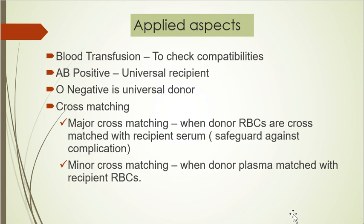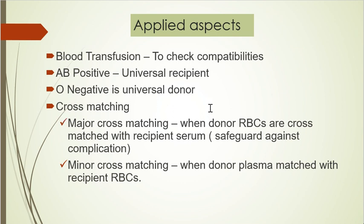Applied aspects include blood transfusion, where compatibility must be checked before transfusing blood from donor to recipient. AB positive is the universal recipient as it has all antigens and no antibodies. O negative is the universal donor as it has no antigens to cause reaction. Cross-matching is performed to check compatibility.